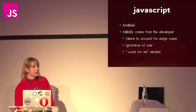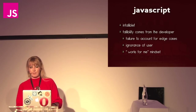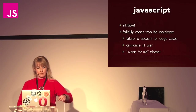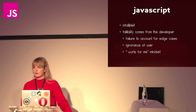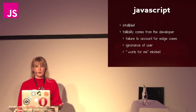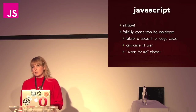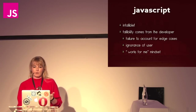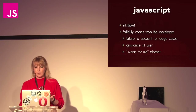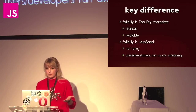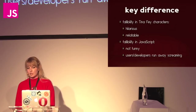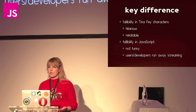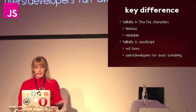So contrast that with JavaScript. JavaScript is actually infallible, which you may or may not believe. Fallibility comes from us, the developers. We fail to account for edge cases. We don't really understand how our code is going to be used by people. We box ourselves into how we think something should work and don't really consider what happens when it doesn't, and we're maybe a little fearful of admitting that. Key difference: fallibility in Tina Fey is hilarious and relatable; fallibility in JavaScript causes us to lose users and developers.